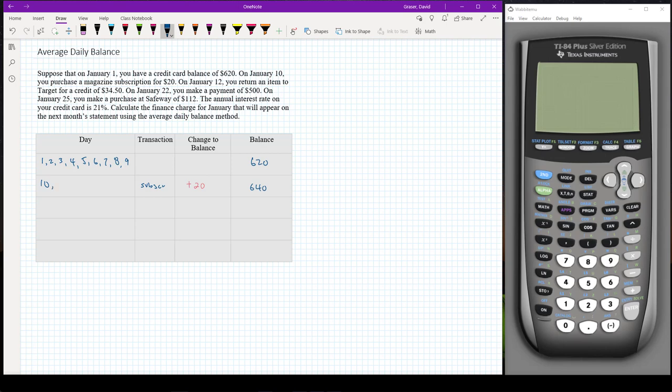So the next transaction is on January 12th, so I'll have that balance of 640 on the 10th and on the 11th. On the 12th I return an item to Target, so that's a return and that's going to reduce my balance by $34.50.